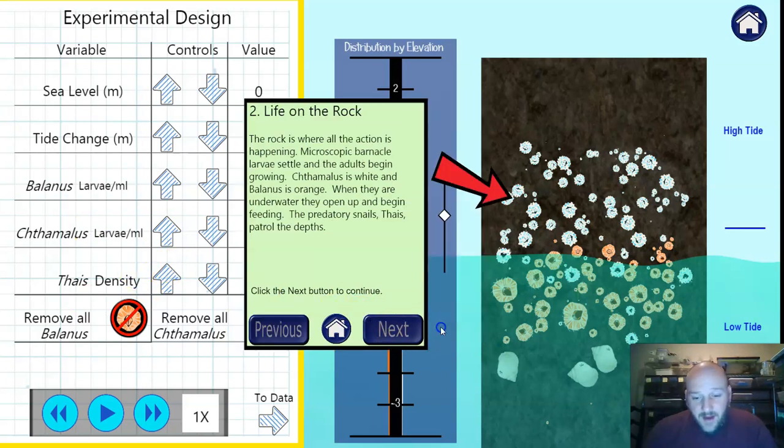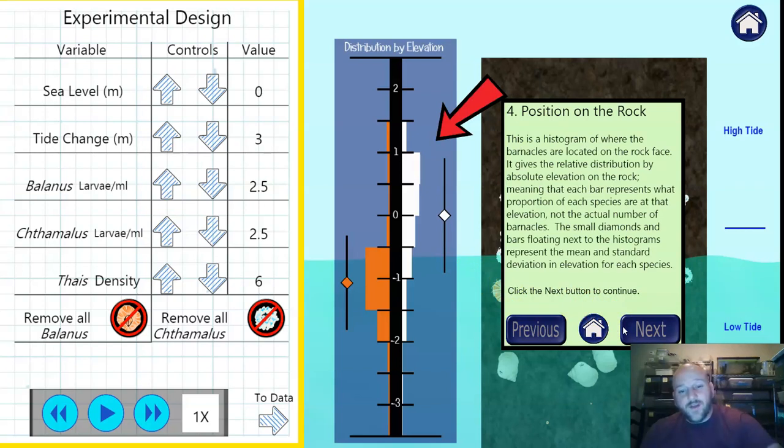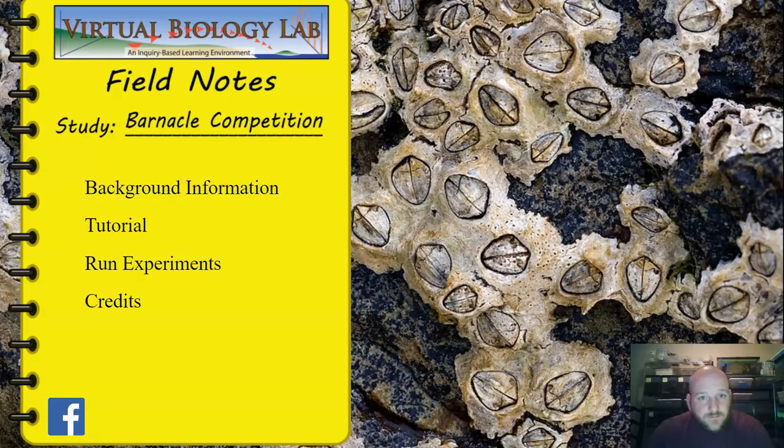It walks you through this. It points out what the different barnacles look like. What I love is here to the left of the actual graphic we see these distributions of the two different populations and it points out that the little graph has this little diamond and line which is the mean as well as its standard deviation, which are terms that I know I go over in my class and that's helpful to have. It shows you where they are in terms of the level on the rock. Again, I think this is well put together.